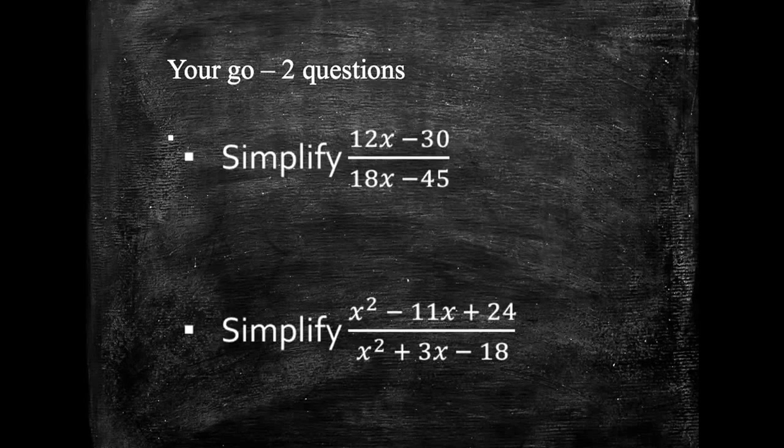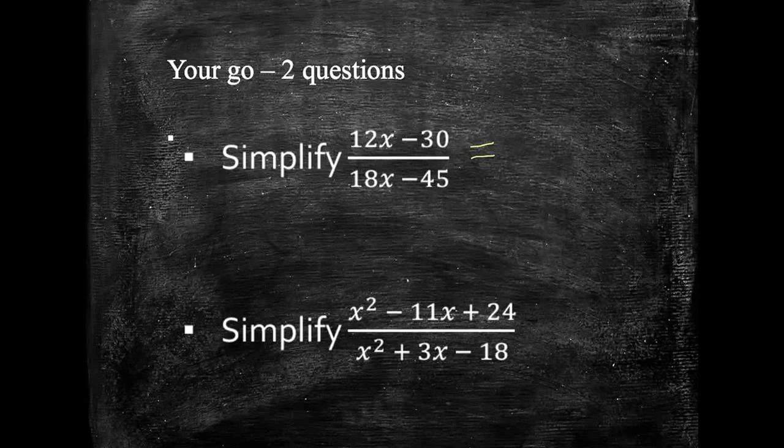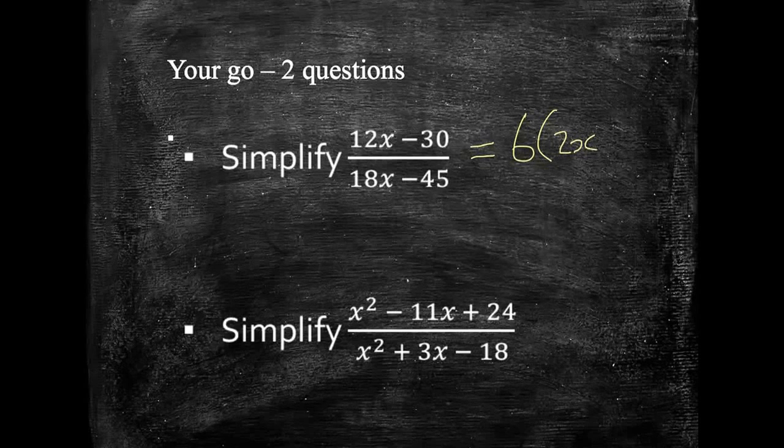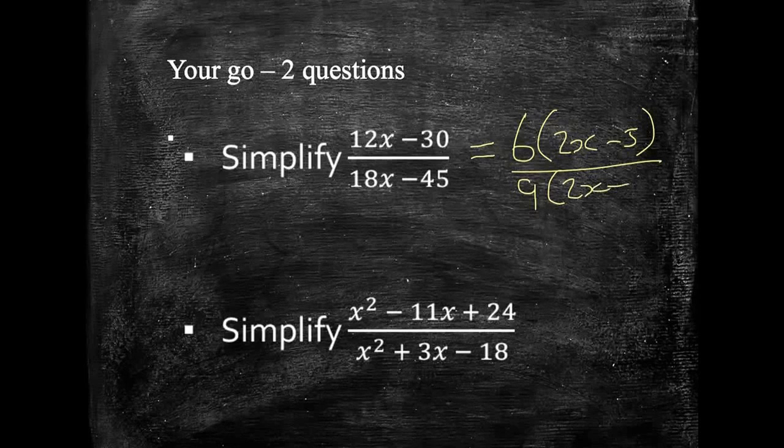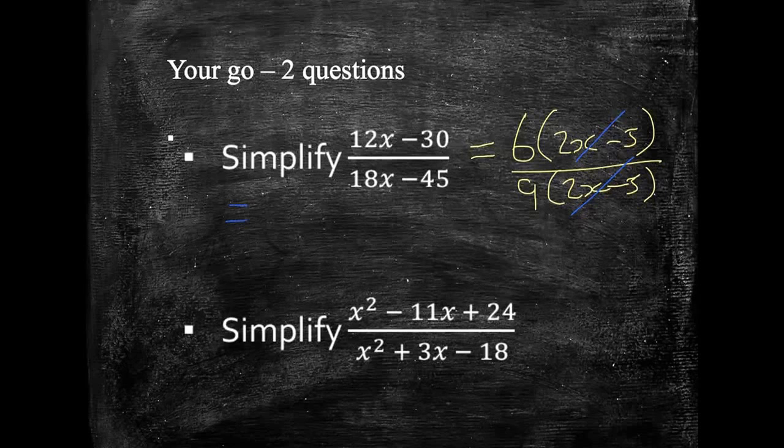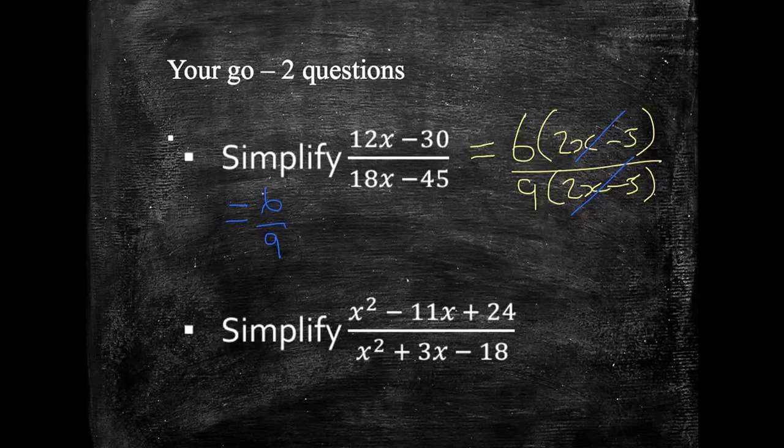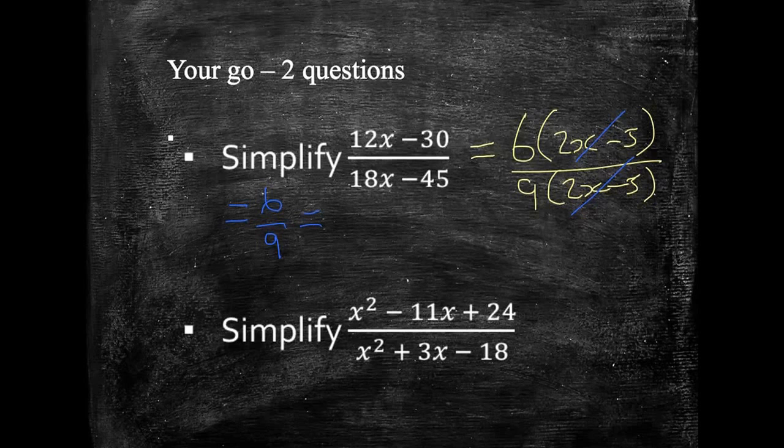Right. Let's have a look at what we did then. On this first one, we've got two linear terms. So, we need to factorise these. It looks like 6 goes into the top. So, we've got 6 lots of 2x minus 5. The bottom, it looks like 9 goes into those. So, 9 lots of, again, 2x minus 5. Fantastic. That means we can cross those out, which gives me an answer of 6 ninths. Hopefully, at that point, you've then realised and you've spotted that 6 ninths is the same as... Well, let's see. What goes into 6 and 9? It's 2 thirds. So, 3 goes into the final answer of 2 thirds.